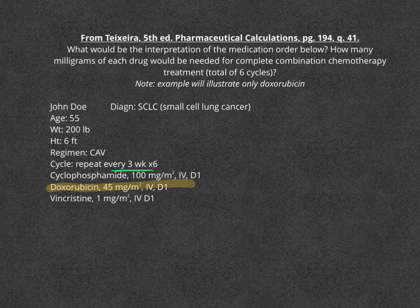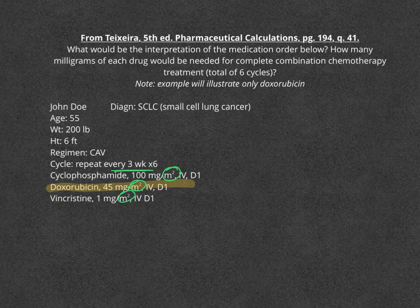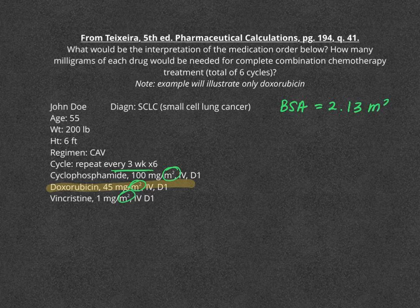We have the information we need, but what we don't have is a body surface area. The reason we need that is because the dosing is in meters squared. We need to calculate the body surface area, which is always in meters squared, in order to calculate the doxorubicin amount. We can use a nomogram — I use the one found on page 176 of the textbook. For this patient, based on his weight and height, his body surface area is about 2.13 meters squared.